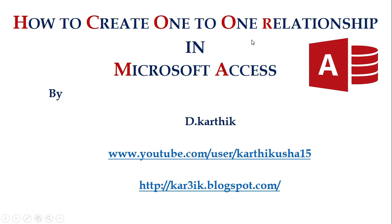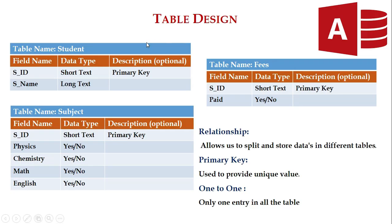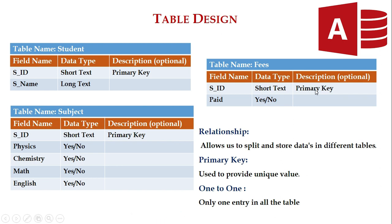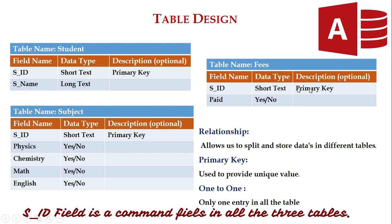In order to create a one-to-one relationship we should analyze the table design first. We want to create three tables: student, subject, and fees. In the student table we have student ID (short text, primary key) and student name (long text). In the subject table we have SID (short text, primary key) and physics, chemistry, math, and English (Yes/No data type). The fees table has SID (short text, primary key) and paid (Yes/No). All three tables share the common field SID of the same data type, and by using this field we are going to create the relationship.